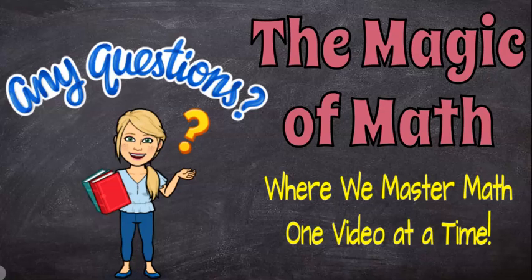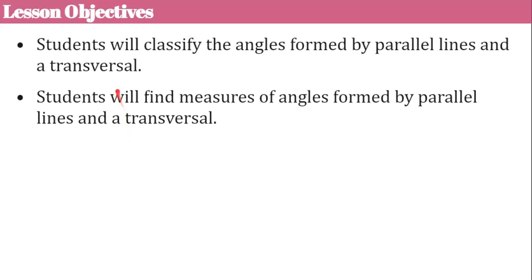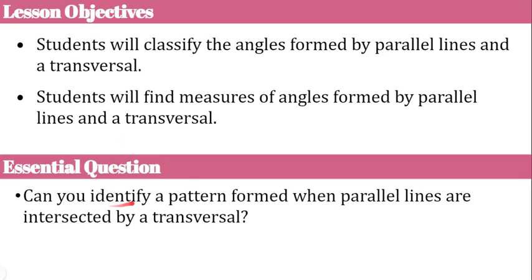Hi, welcome to the Magic of Math, where we master math one video at a time. Today my video lesson is on the angles that are formed when parallel lines are intersected by a transversal line. Our objectives are that you will classify the angles formed by parallel lines and a transversal, and find their measures. As I go through the lesson, consider: can you identify a pattern formed when parallel lines are intersected by a transversal?